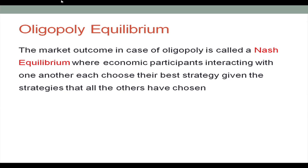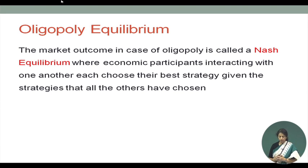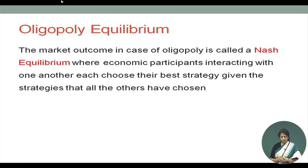The market outcome in case of oligopoly is called a Nash equilibrium, where economic participants interacting with one another each choose their best strategy given the strategies that all the others have chosen.